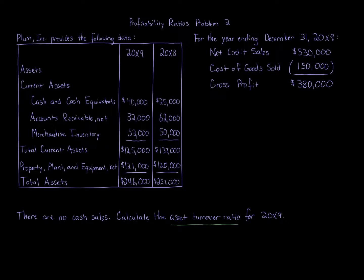Profitability analysis includes many different ratios: ratio of net sales to assets, rate earned on total assets, rate earned on stockholders' equity, rate earned on common stockholders' equity, earnings per share, dividend yield — lots of important ones. We're focusing on the asset turnover ratio.